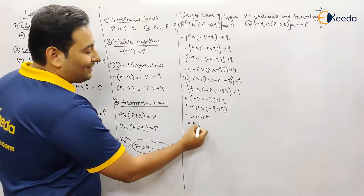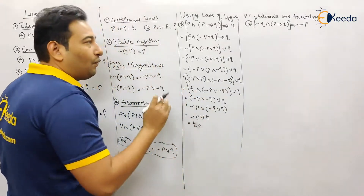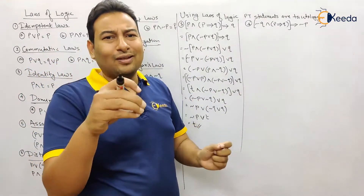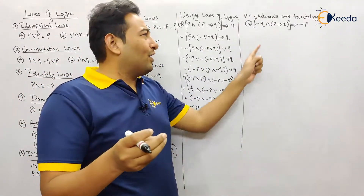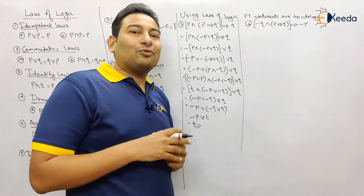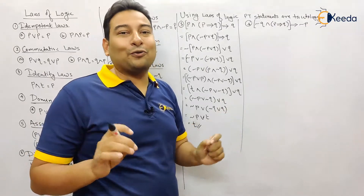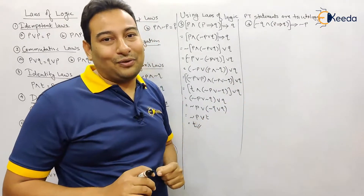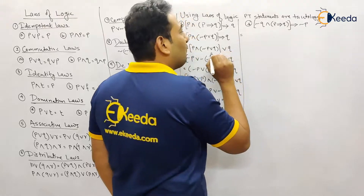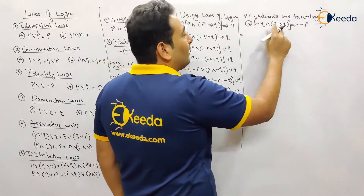Since the statement has a true value, it is a tautology. Problem four is exactly similar with a few extra negations. I highly recommend you pause the video, try to solve it yourself, then verify your results. Let's move on and solve it together. First, we'll solve the inner implication: this becomes negation q or negation of the first term, or second term.